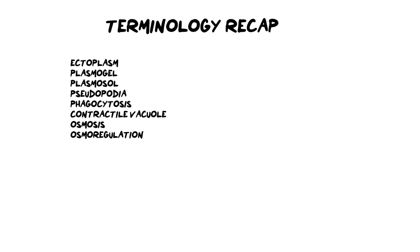Now let's finish with a terminology recap, because all of these words can be used for your flashcard studying, which is the best way to study life sciences. We started off looking at the generalized structures seen specifically in amoeba and focused on the ectoplasm. The ectoplasm is an extension of the cytoplasm — it is the most outer layer, right up against the cell membrane. Ecto means outside, and that ectoplasm has two different consistencies.